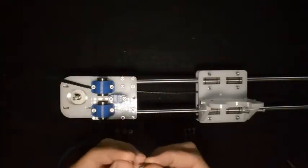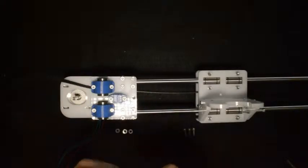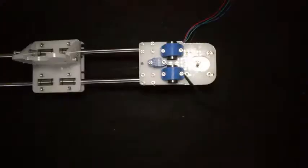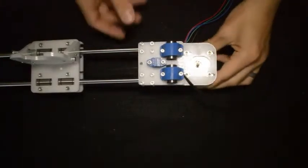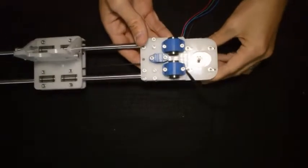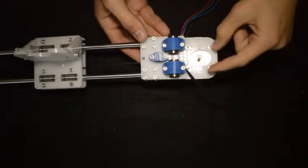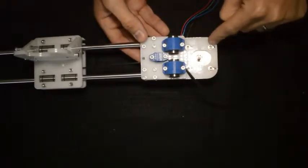And we will bolt the motor down with the 4 screws and the 4 washers. Once we have done that, it will look like this. Make sure the motor is on the right-hand side of the slots that are provided for it.